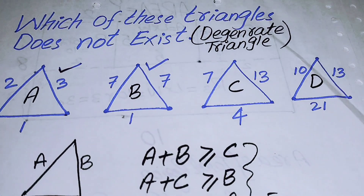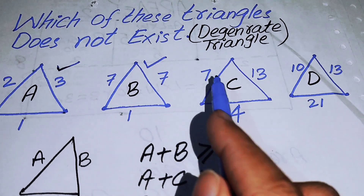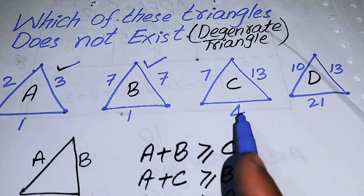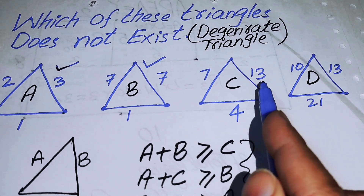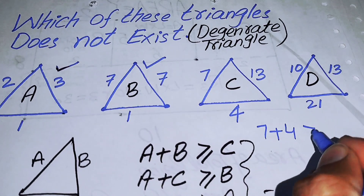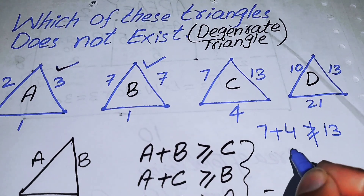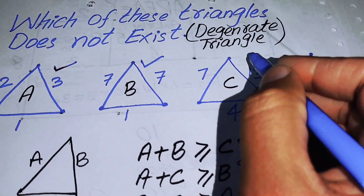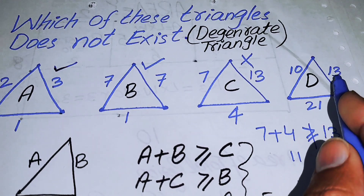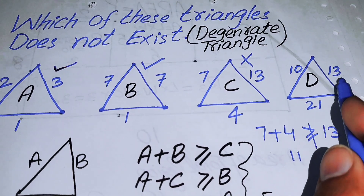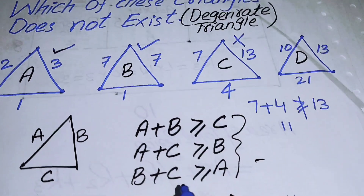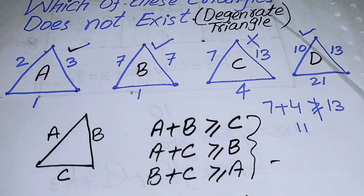For triangle C with sides 13, 7, and 4: 13 + 7 = 20 > 4, but 7 + 4 = 11, and 11 is not greater than or equal to 13, so triangle C is NOT a valid triangle — it fails the condition. For triangle D with sides 10, 13, and 21: 10 + 13 = 23 > 21, and 13 + 21 = 34 > 10, so all conditions hold and triangle D is a valid triangle.